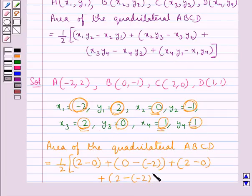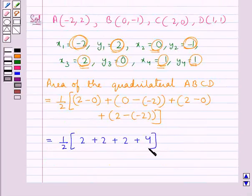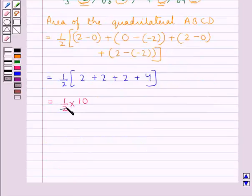So this whole is multiplied by 1 upon 2. So this is equal to half into 2, plus 2, plus 2, and plus 4, which is equal to half into 10, and this is equal to 5.